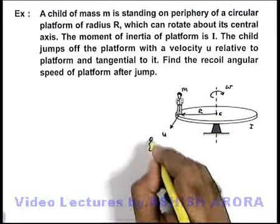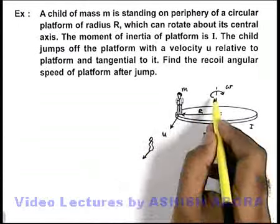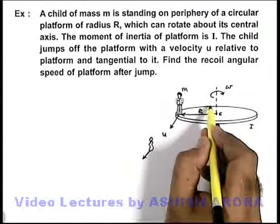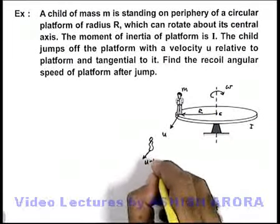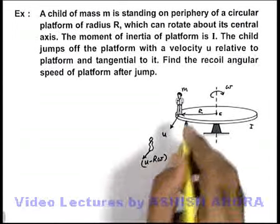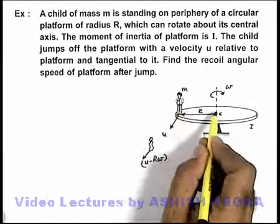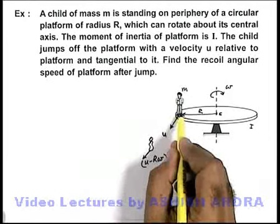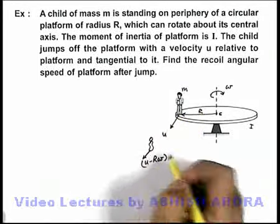When the boy jumps off, his speed would be u. As the platform starts rotating backward, its speed with respect to the ground would be u minus R omega, because the particles on the platform move backward with speed R omega.